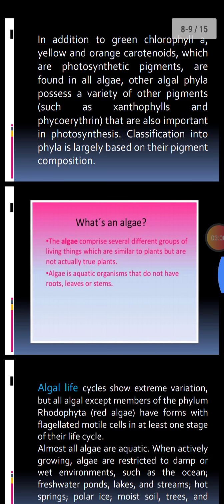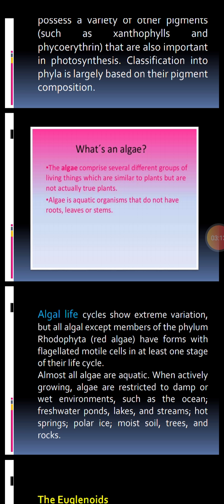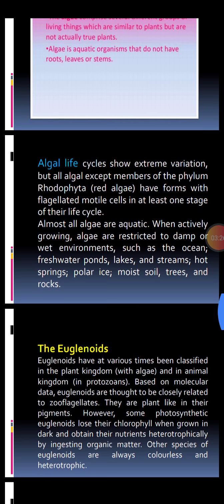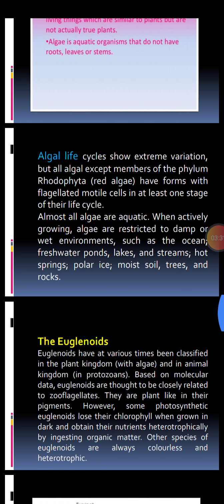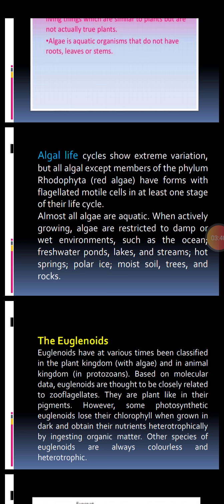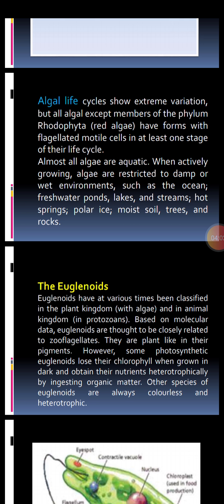There are many algal varieties in different environments. Algae may be green algae, brown algae, or red algae, and they contain several groups of living things similar to plants. The algal life cycle shows extreme variations. All algae except members of phylum Rhodophyta — red algae — have forms with flagellated motile cells in at least one stage of their life cycle. Almost all algae are aquatic, restricted to damp environments like oceans, freshwater ponds, lakes, streams, hot springs, polar ice, moist soil, trees, and even rocks.